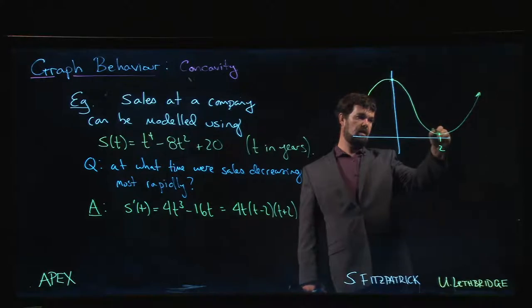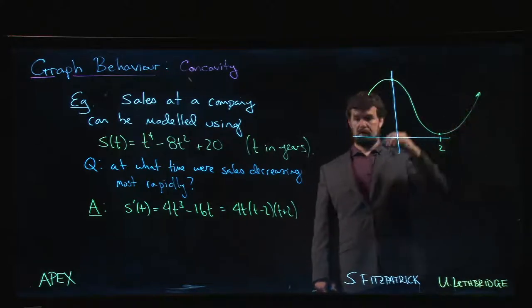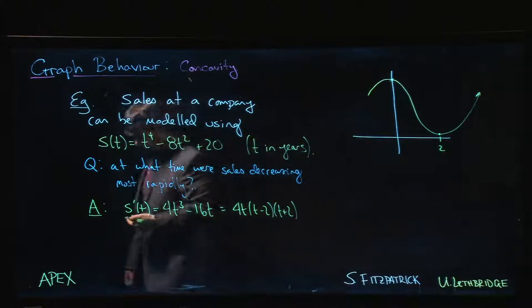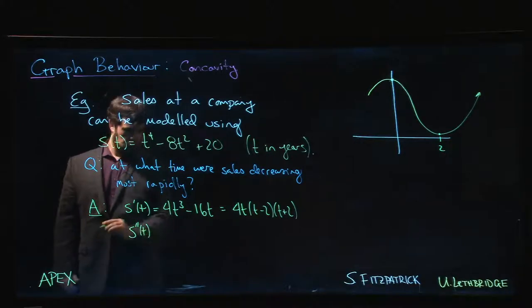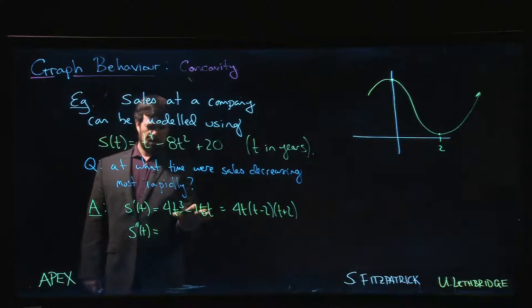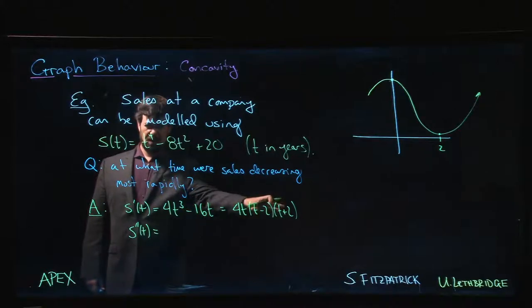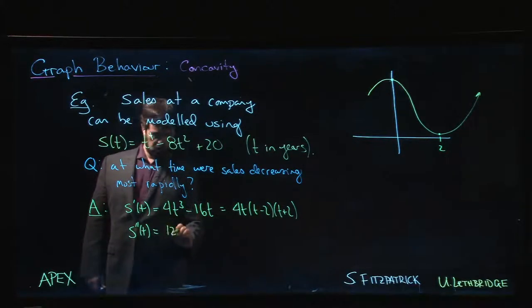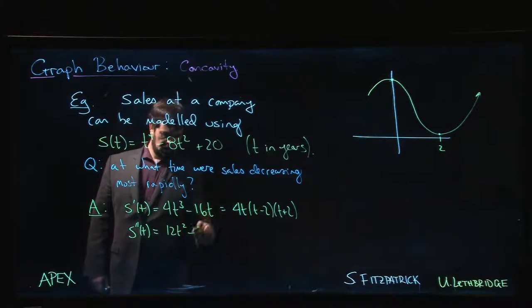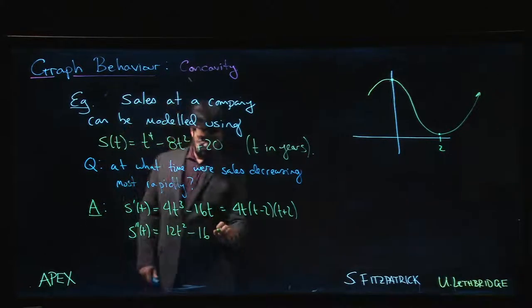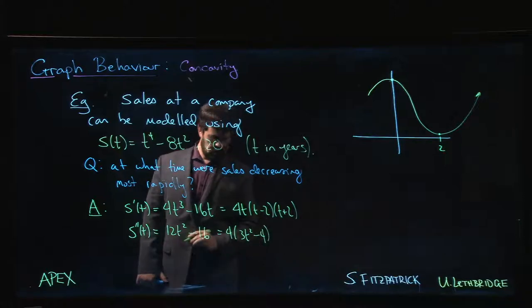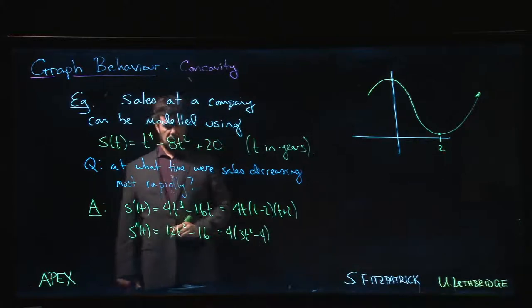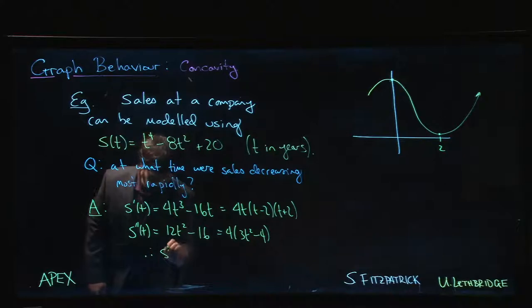For the second derivative, we take the derivative here. Don't do it here - you'd have to use the product rule. We have 12t² - 16, which is 4(3t² - 4).